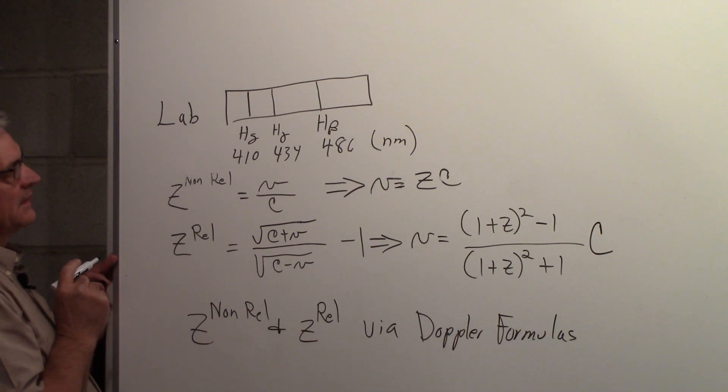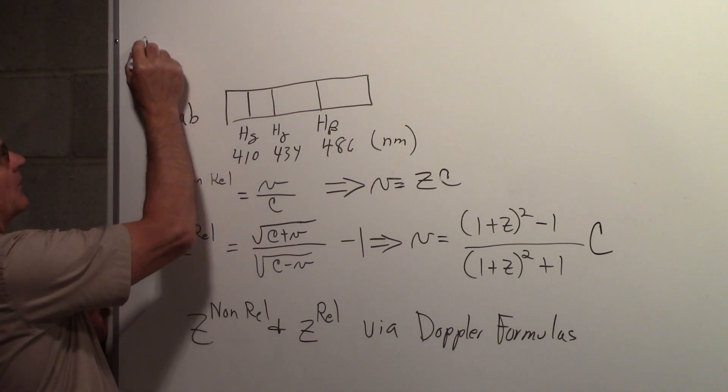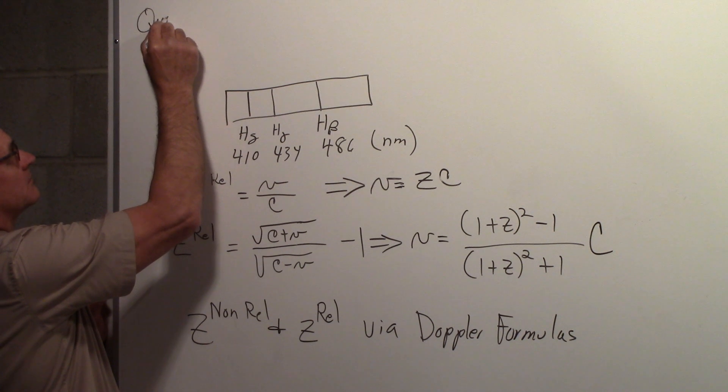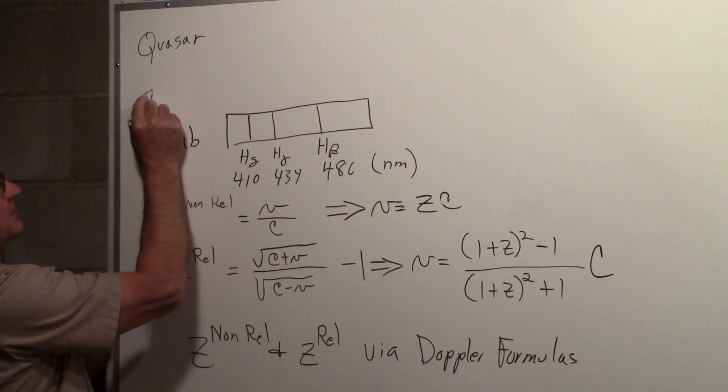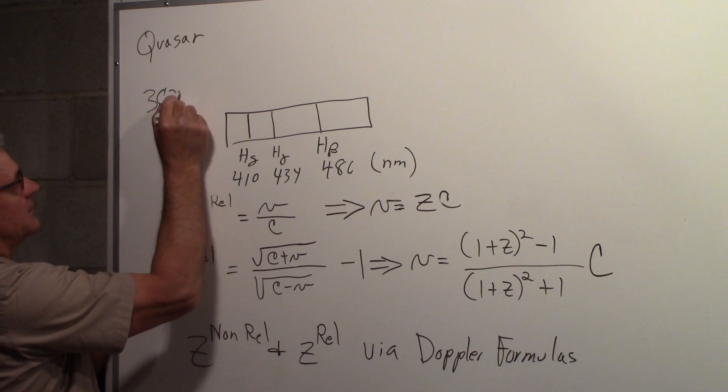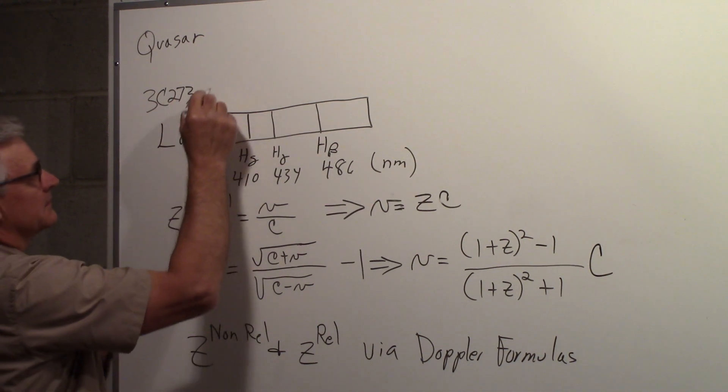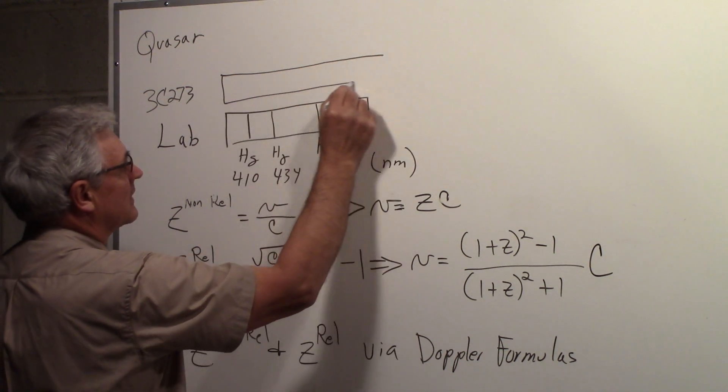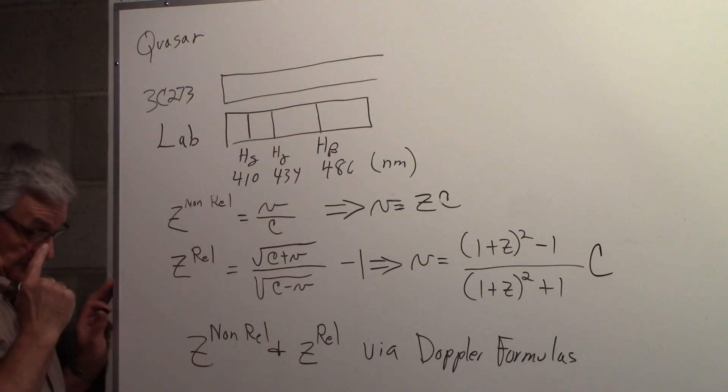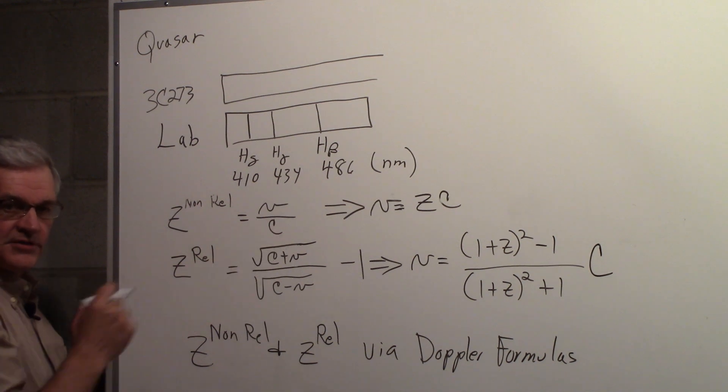Now we're going to look at a quasar, and the particular one we're going to look at is known as 3C273. So we're going to look at what that spectrum looks like. And so that's a distant object in the universe.